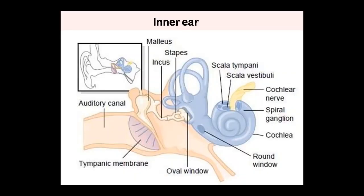Good morning students. This is our end-of-physio class today — the third class on ear anatomy and physiology. Today we will study the inner ear: the anatomy and physiology of the inner ear. In the first two classes we covered the external ear and the middle ear in detail. Now our third class is the inner ear, which is shown in the diagram.